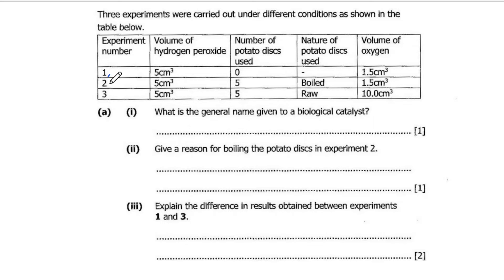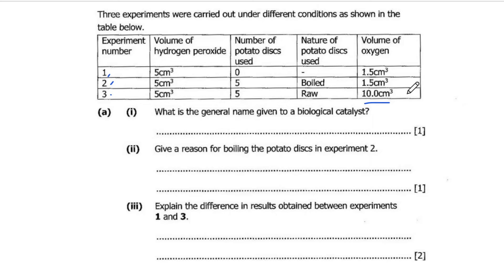We have experiments 1, 2 and 3. The volume of hydrogen peroxide used is constant at 5 cubic centimeters. The number of potato discs in experiment 1 is none, in experiment 2 we use 5, and in experiment 3 we also use 5. The nature of the potato in experiment 2 was boiled, while in experiment 3 the raw potato was used. The volume of gas collected in experiment 1 was 1.5 cubic centimeters, the same as experiment 2, and in experiment 3 we collected 10 cubic centimeters, which was the highest volume.